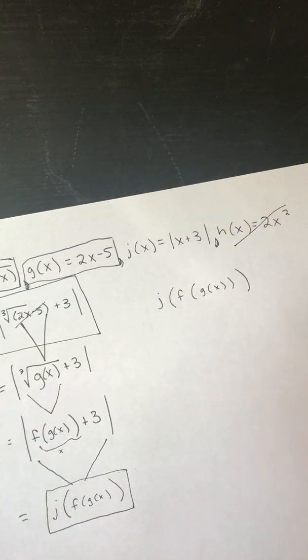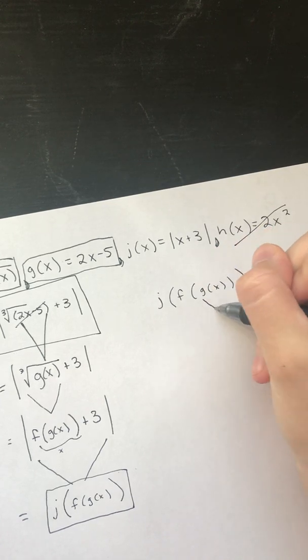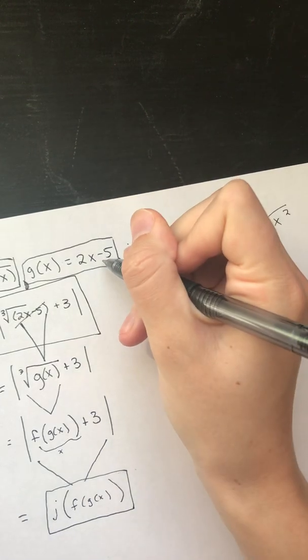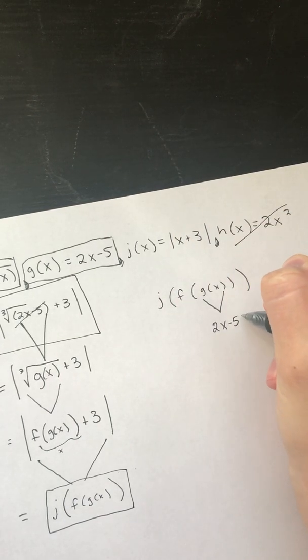So we're gonna approach this the same way we approach all of them. We say what's the thing deepest in the parentheses. G of x. What is g of x? We're expanding it out this time so we're gonna say it's 2x minus 5.